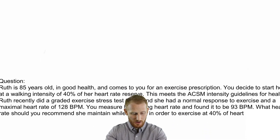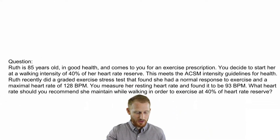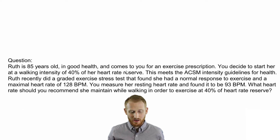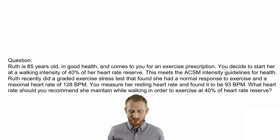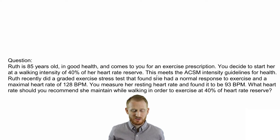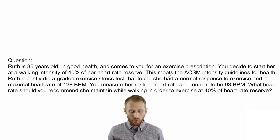Let's start with a question. Ruth is 85 years old. She's in good health and comes to you for an exercise prescription. You decide to start her at a walking intensity at 40% of heart rate reserve, which meets the ACSM guidelines for health.